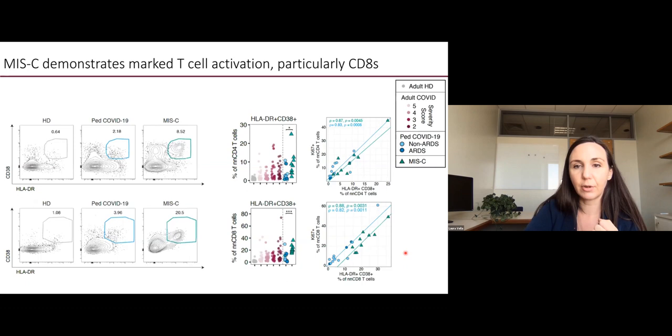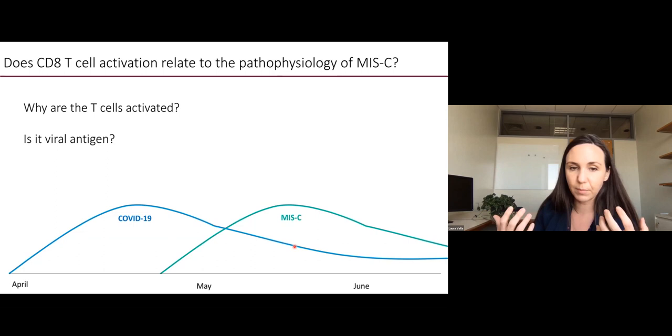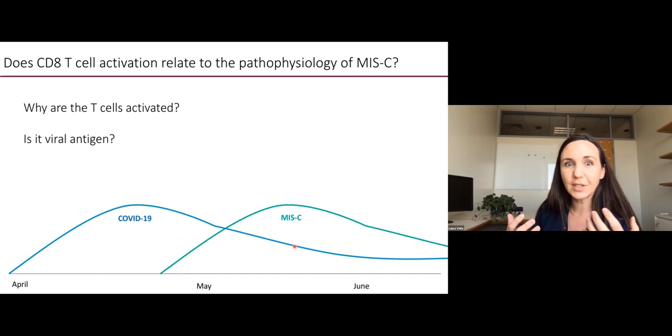But interestingly, when we look at the T-cells that are remaining, you can see that both in CD4 T-cells in this top row and CD8 T-cells in the bottom row, there is marked activation of these cells. CD4 T-cells are quite activated, and that correlates with KI-67 expression. But especially the CD8 T-cells in MIS-C are not just very activated, but they are at or above the levels of activation observed in the very sickest adults.